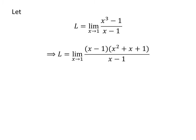x cubed minus 1 can be factorized as (x minus 1) times (x squared plus x plus 1). So L is the limit of (x minus 1)(x squared plus x plus 1) over (x minus 1) as x approaches 1.